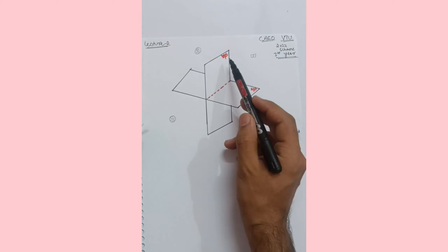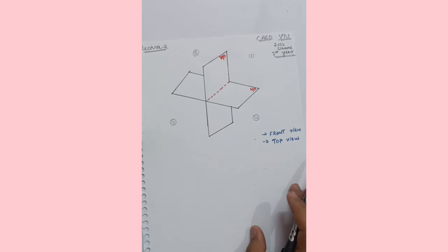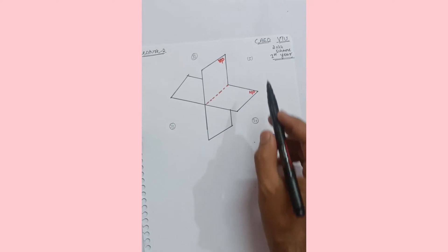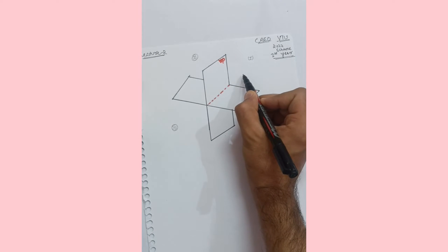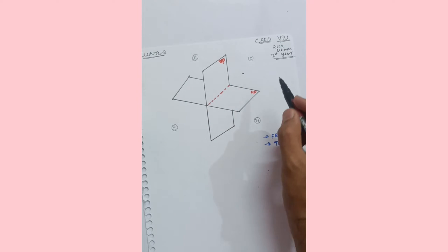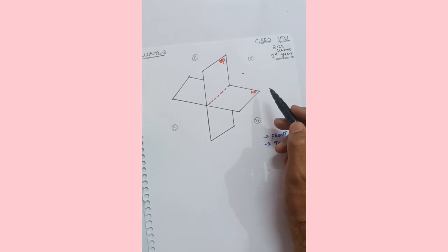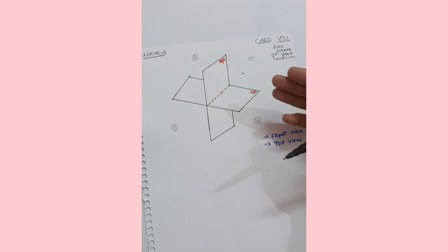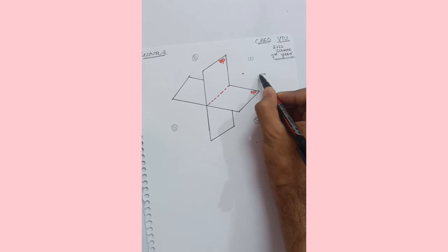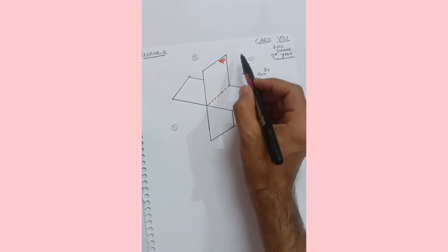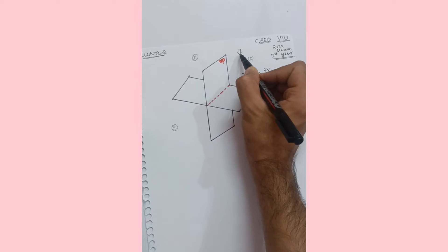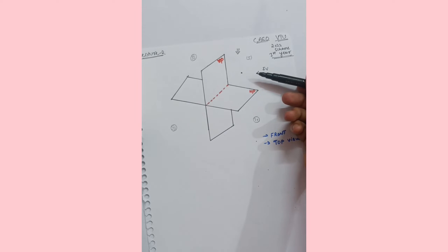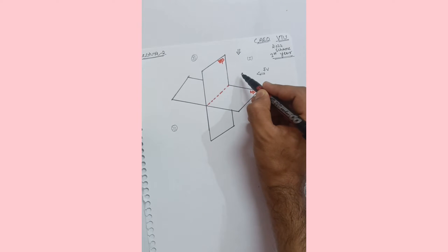In this video we will discuss front view and top view. As you already know, this is the horizontal plane and vertical plane. Let me assume a point in the first quadrant. I have to draw the front view and top view of this point. When looking in this direction, that gives the front view. I am looking from the front to find the shadow of this point.